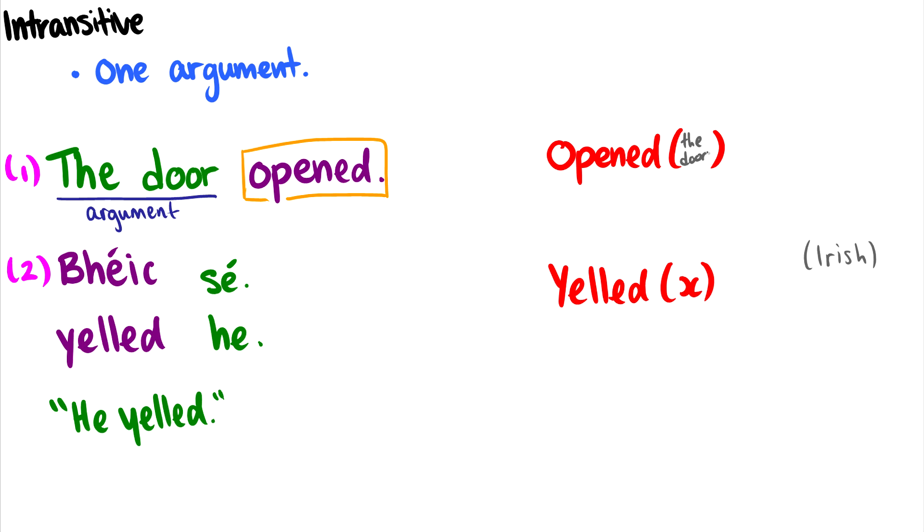Here's another example in Irish: 'yelled he.' As we can see here, in this language Irish, the verb occurs first and then the argument, which is 'he,' occurs afterwards. So this sentence 'he yelled' - yelled only takes one argument and that argument of yelled is 'he.'